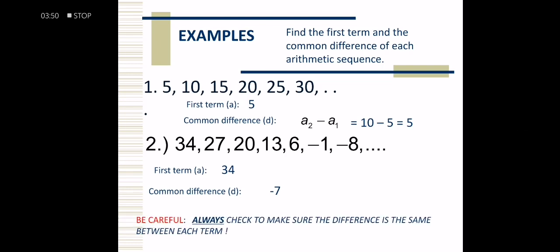Always be careful. Always check to make sure the difference is the same between each term. Let's check using example number 1: 30 minus 25 is 5, 25 minus 20 is 5, 20 minus 15 is 5, 15 minus 10 is 5, 10 minus 5 is 5. So this confirms it's an arithmetic sequence.